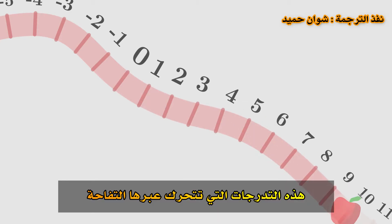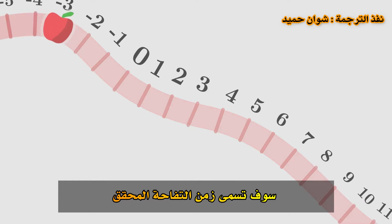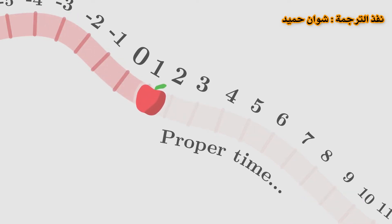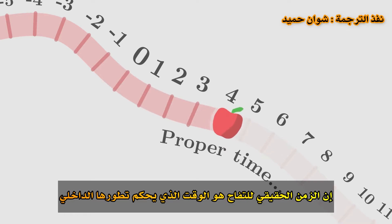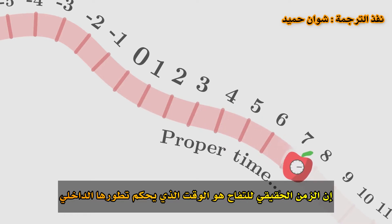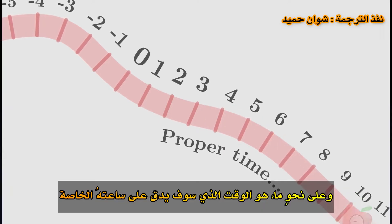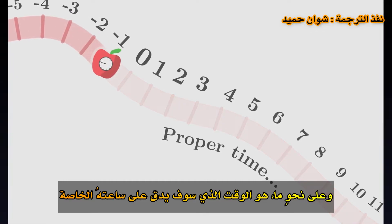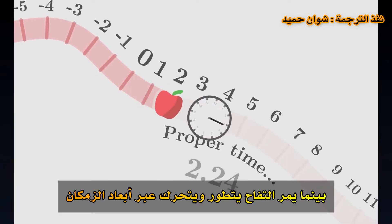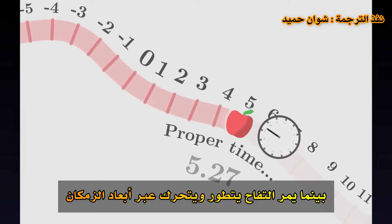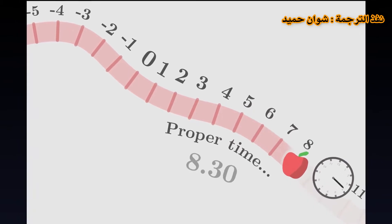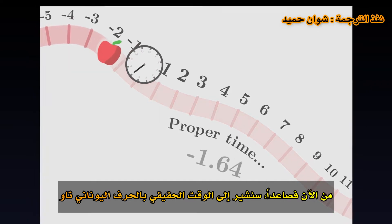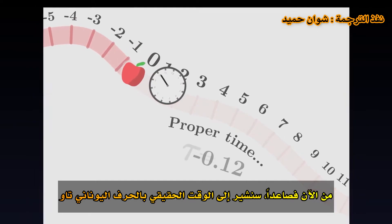These graduations along which the apple moves will be called the apple's proper time. The proper time of the apple is the time that governs its internal evolution. In a way, it is the time which would tick on its own clock. As it passes, the apple evolves and moves through the dimensions of space-time. From now on, proper time will be indicated by the Greek letter TAU.